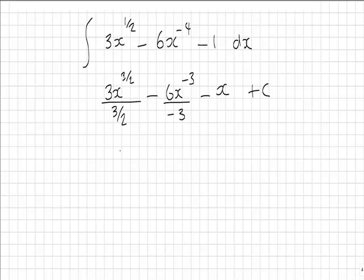Now you may want to tidy this up somewhat. Remember, when you divide by a fraction, you can multiply by its reciprocal. So that will give us 2 times 3, which is 6x to the 3 over 2, divided by 3. The 2 minuses cancel there, giving us plus 6x to the minus 3 over 3, minus x plus C.